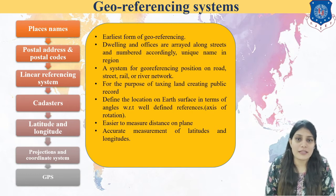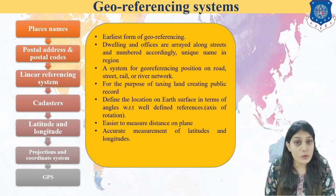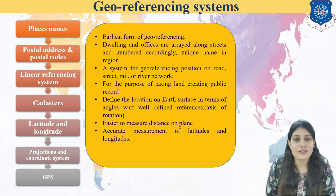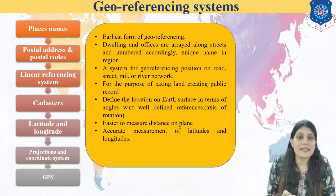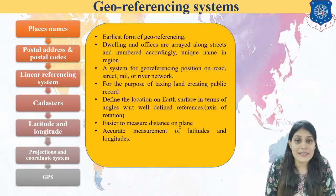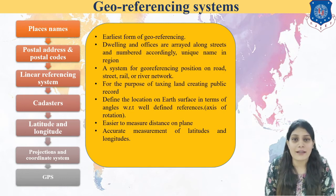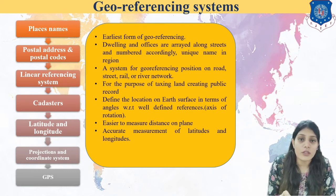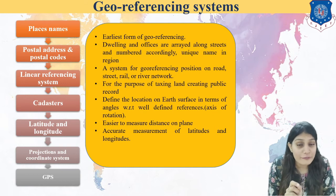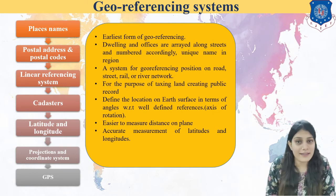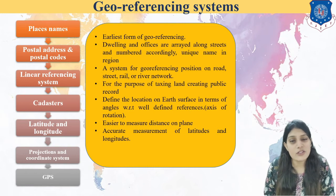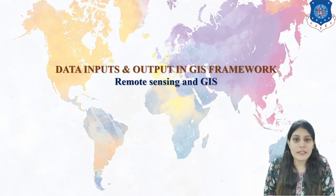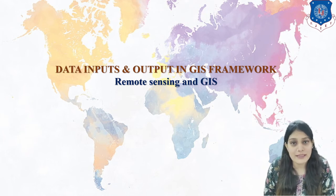Addresses and postal codes are different for every area — that is the geo-reference. For example, the satellite area where ISRO is located has the postal code 380015. There is a unique ID that is a geo-reference: if I input postal code 380015, it falls on the satellite area. This is your geo-referencing system.